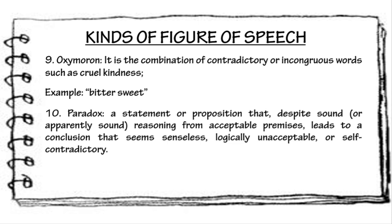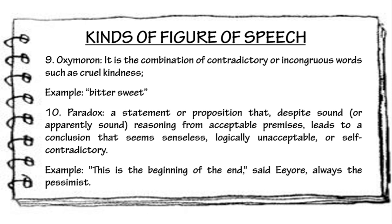Paradox is a statement or proposition that, despite sound reasoning from acceptable premises, leads to a conclusion that seems to be senseless, logically unacceptable, or self-contradictory. Example: 'This is the beginning of the end,' said Eeyore, always the pessimist. We use the word 'beginning' to complement the word 'end.' Just like in the example, it is a statement that appears at first to be contradictory, but upon reflection then makes sense.